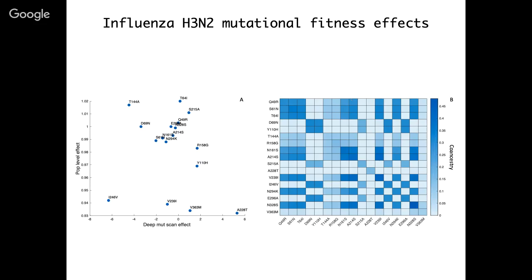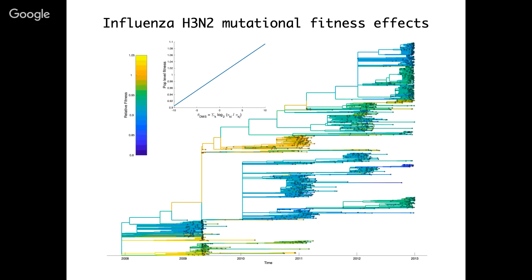We did a second analysis where, even though we couldn't estimate site-specific fitness effects for influenza, we could still try to estimate the fitness effects of particular lineages in the H3N2 phylogeny. Instead of estimating site-specific fitness effects from the phylogeny, we took the fitness effects estimated by Lee et al. using deep mutational scanning as our best-guess predictor. We combined the fitness effects of mutations across sites into an overall predictor of the fitness of each lineage, which we call theta-DMS — the sum of the log fitness effects, i.e., the log change in preference ratio for two amino acids at a given site.